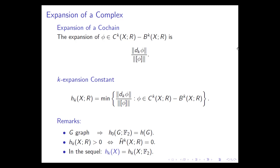If hₖ is zero then there are no cocycles except coboundaries, so the numerator will always be non-zero, meaning we never get zeros in our ratio. Conversely, the Cheeger constant is positive if and only if the k-th cohomology vanishes. We can think of hₖ as a measure of 'k-connectedness' of the complex—the bigger hₖ is, the more vanishing the cohomology is.